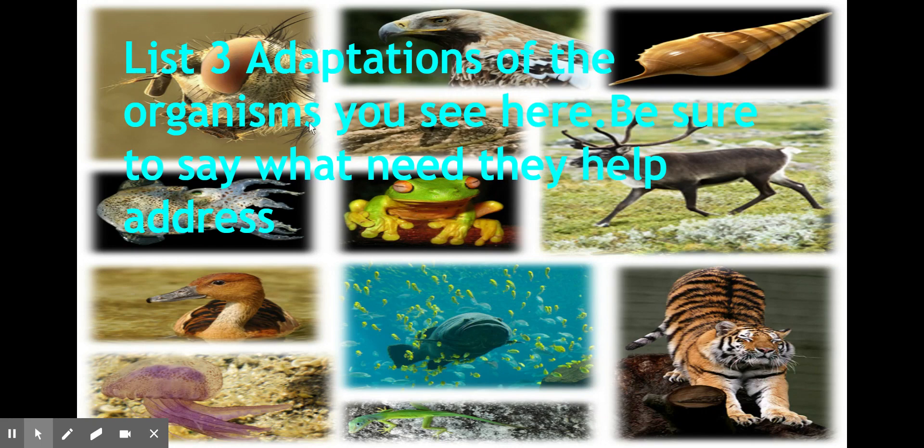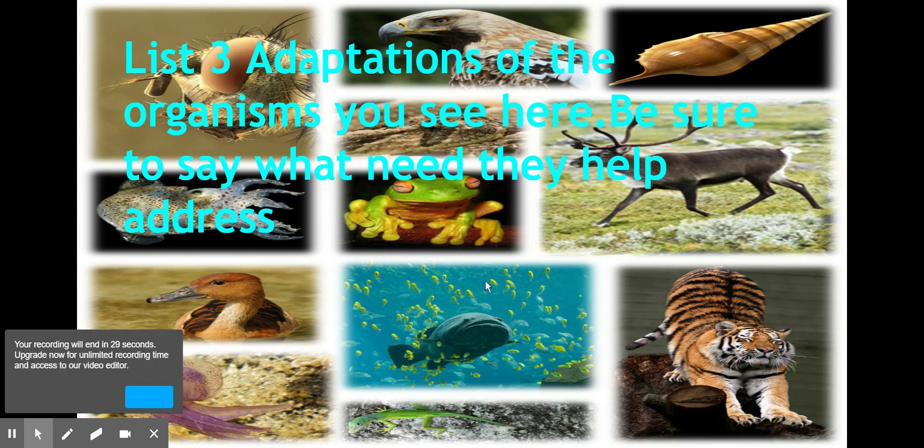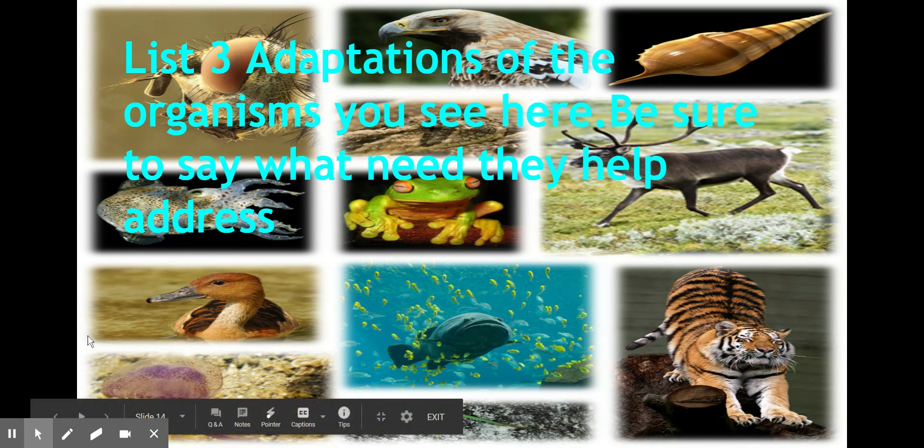On this picture, you'll see many different types of species, from a fly to a hawk to a snail to a caribou. I want you to pick some of these organisms and make a post in Google Classroom with as many characteristics that are adaptations as you can. Be sure to list the organism you're talking about and make sure that you are telling me its adaptations.